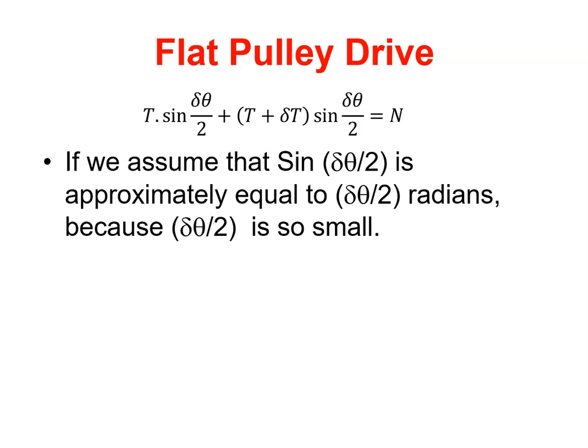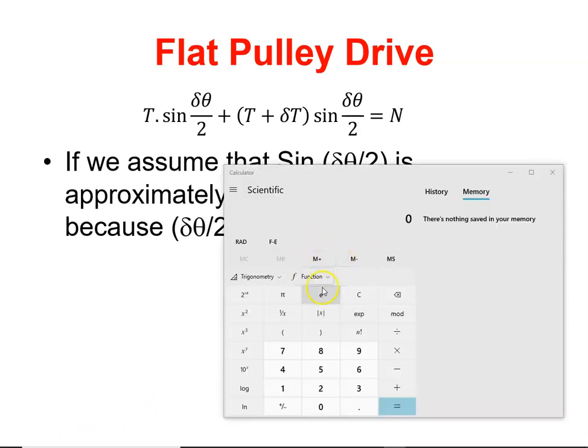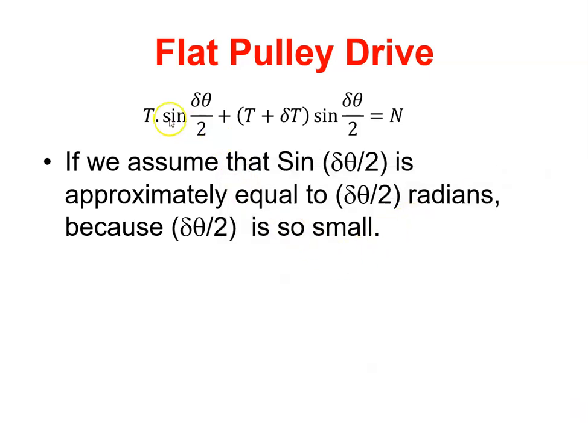Now, if we assume that sine Dθ is approximately equal to Dθ radians, because Dθ is so small, well, let's just look at that for a second. Here's a calculator, and I put it on to radians, and I'm going to take a really small angle, like 0.03, so if I go sine of 0.03 equals 0.03. So in radians, when you have a really small angle, the sine of the angle is actually equal to the angle.